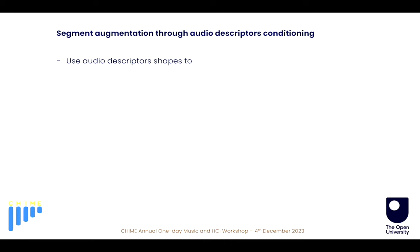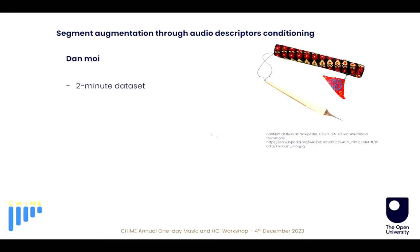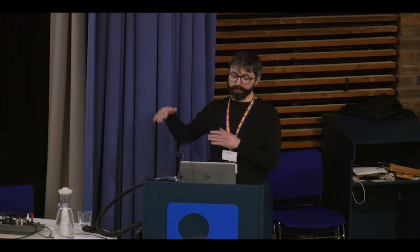How can we use these descriptor shapes to generate new segments with similarities to the original audio database and expand on these? In the second part of my presentation, I will provide an example of what I mean, without going into details about the model I've implemented. I recorded myself a couple of minutes of sounds produced with this instrument, which is a Dan Moi in the family of the mouth harp. What I wanted to do was to have a model able to take segments produced with this instrument and vary them — generate variations operating on one of these audio descriptors: spectral centroid, spread, and amplitude.